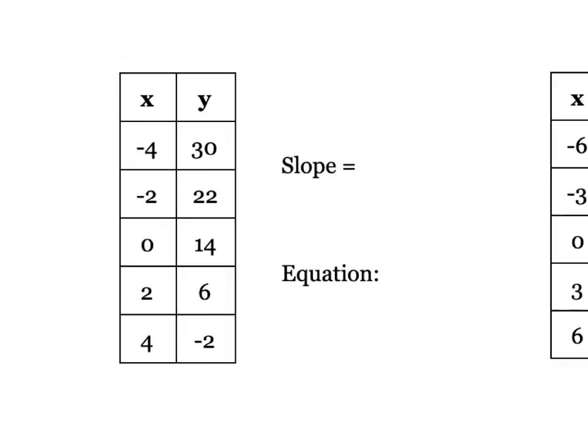For the third example, bottom left. Checking through the slope first, remember I need change in y over change in x. The change in y going from 30 to 22 is subtracting 8, from 22 to 14 is subtracting 8, from 14 to 6 is subtracting 8, from 6 to negative 2 is subtracting 8. So the change in y is negative 8. Now notice on this table, the x values are not going up by 1, they're going up by 2. So my change in x is 2. So my slope would be negative 8 divided by 2, which is negative 4.